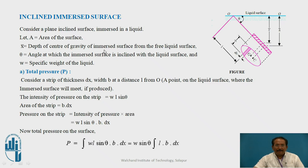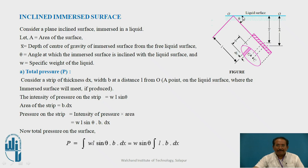Consider a plane inclined surface immersed in a liquid. Let capital A be the area of the surface. x-bar is the depth of center of gravity of the immersed surface from the free liquid surface. Theta is the angle at which the immersed surface is inclined with the liquid surface. W is the specific weight of the liquid.